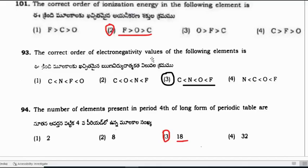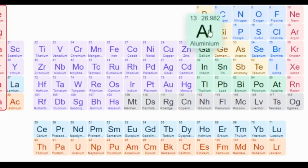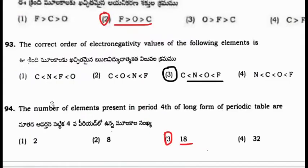Question: The correct order of electronegativity values is: C < N < O < F. Question: How many elements are present in the fourth period of the long form of the periodic table? The first period has 2, the second period has 8, the third period has 8, and the fourth period has 18 elements. The correct answer is 18.